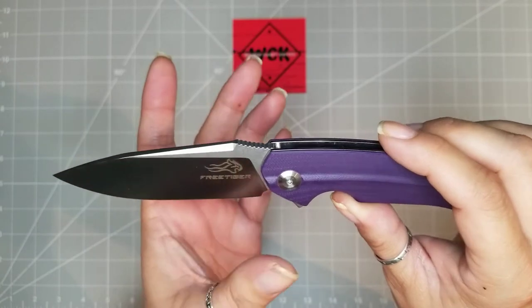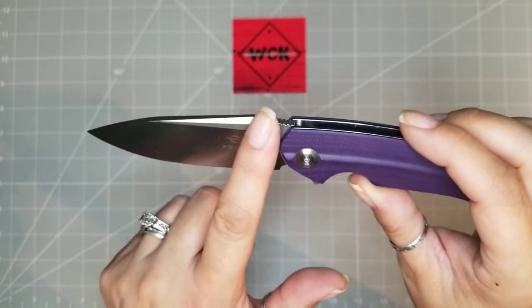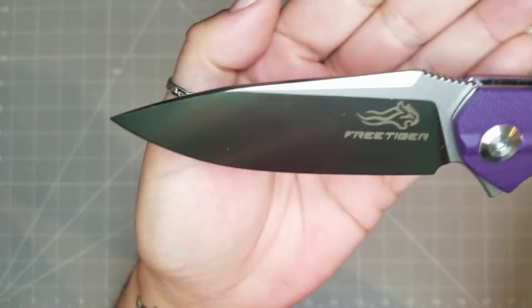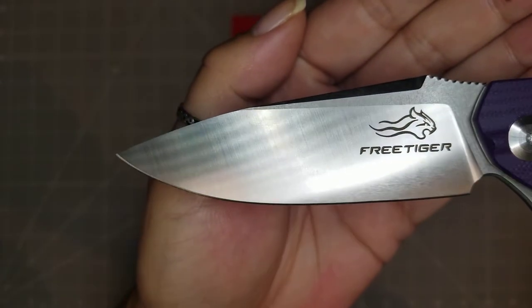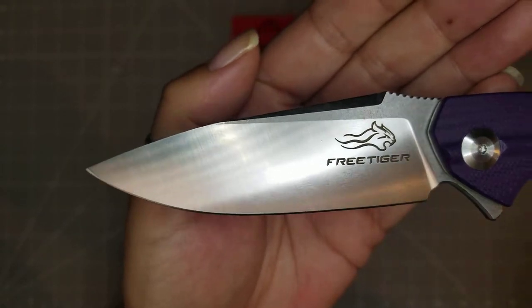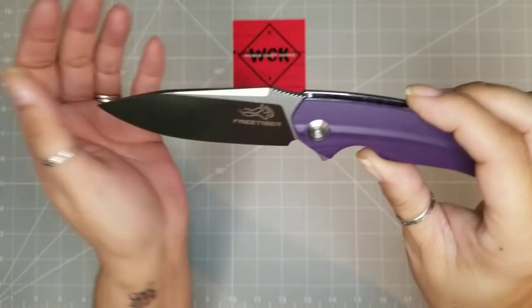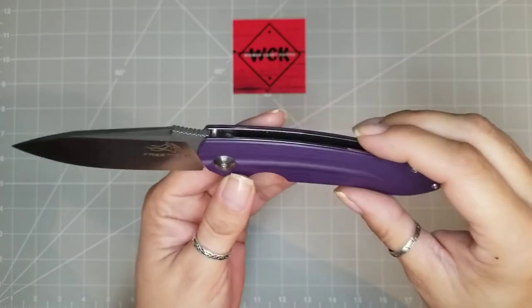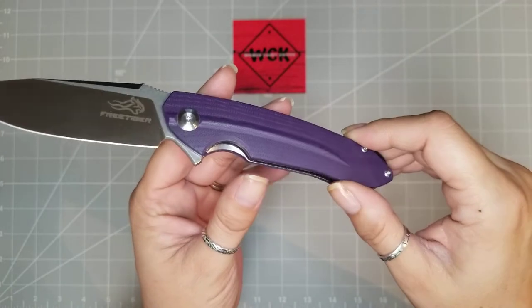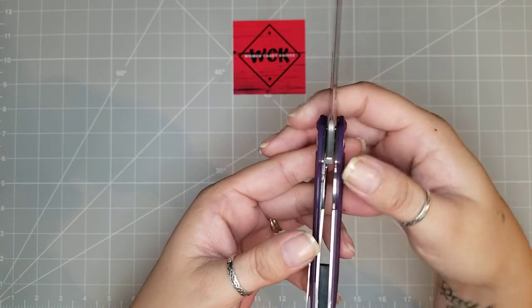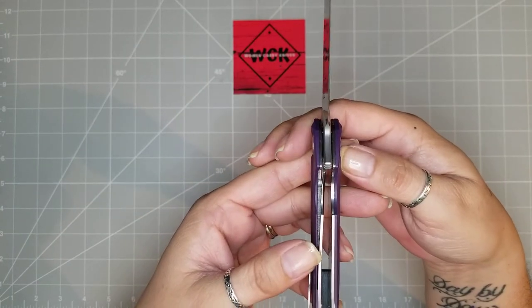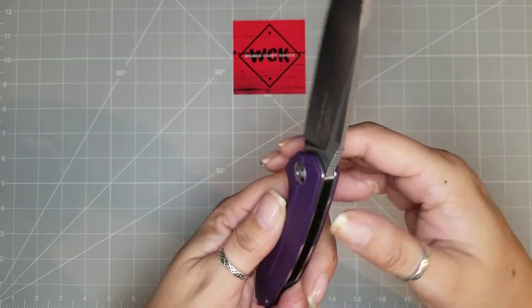Your blade, like I said, it is D2. You have this gorgeous stonewash on the flats. You can take a little look at their emblem there, too. But you see the stonewash on the flats there, and then the beautiful satin grind on this. You're looking at a liner lock, this is just a fabulous knife all around. I'm really enjoying it.